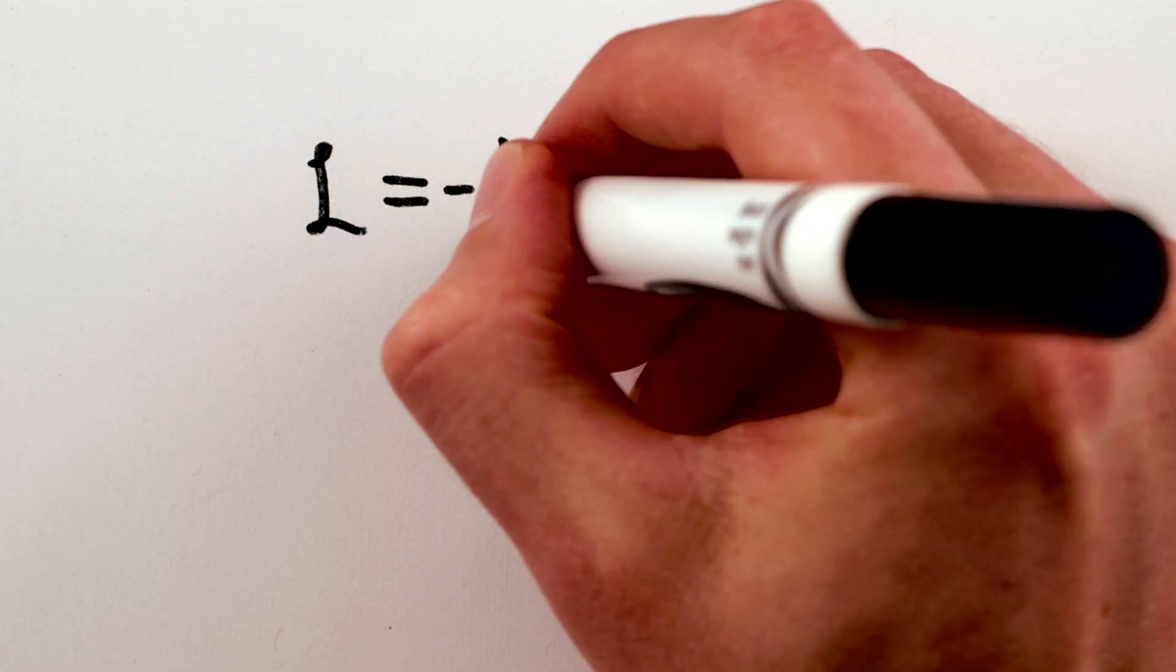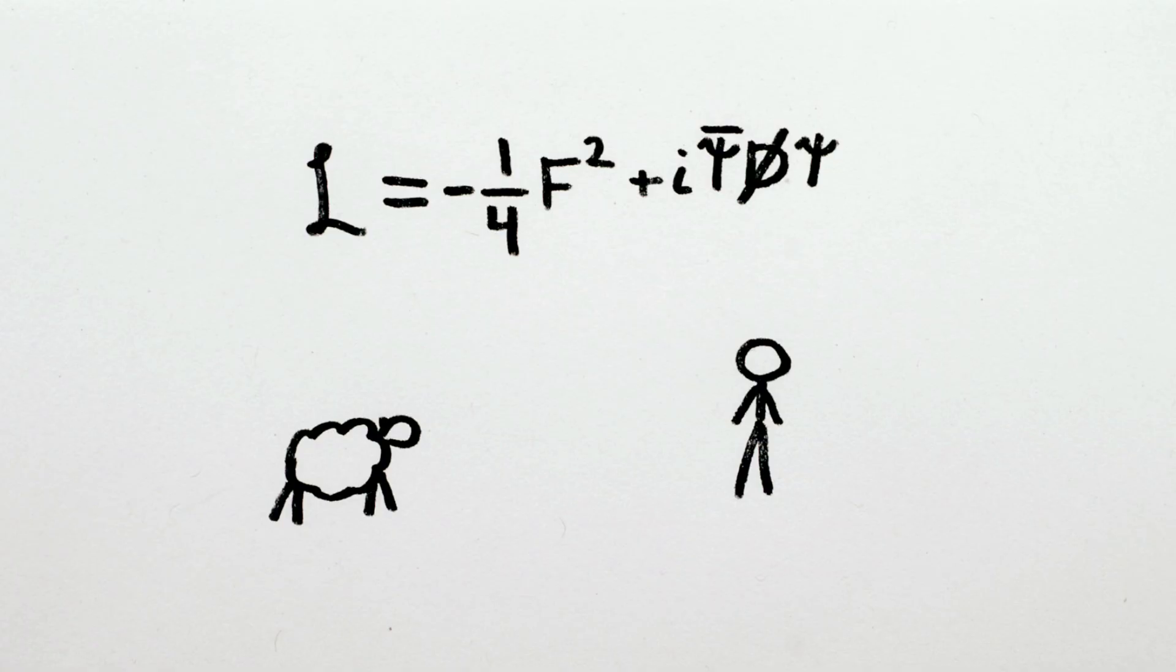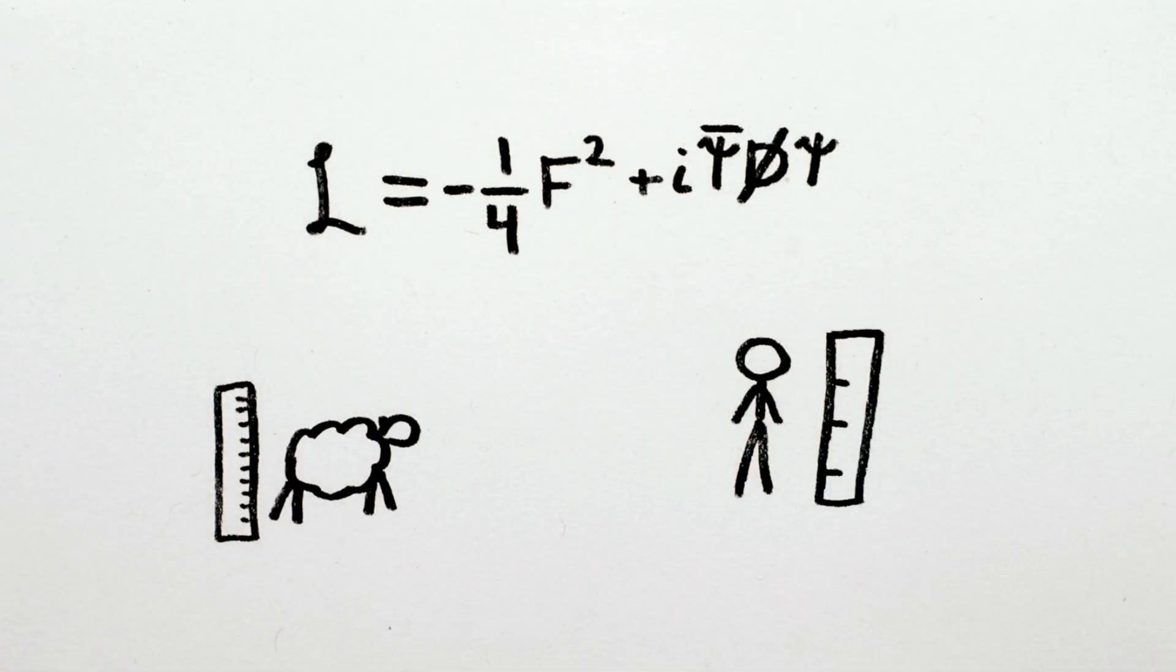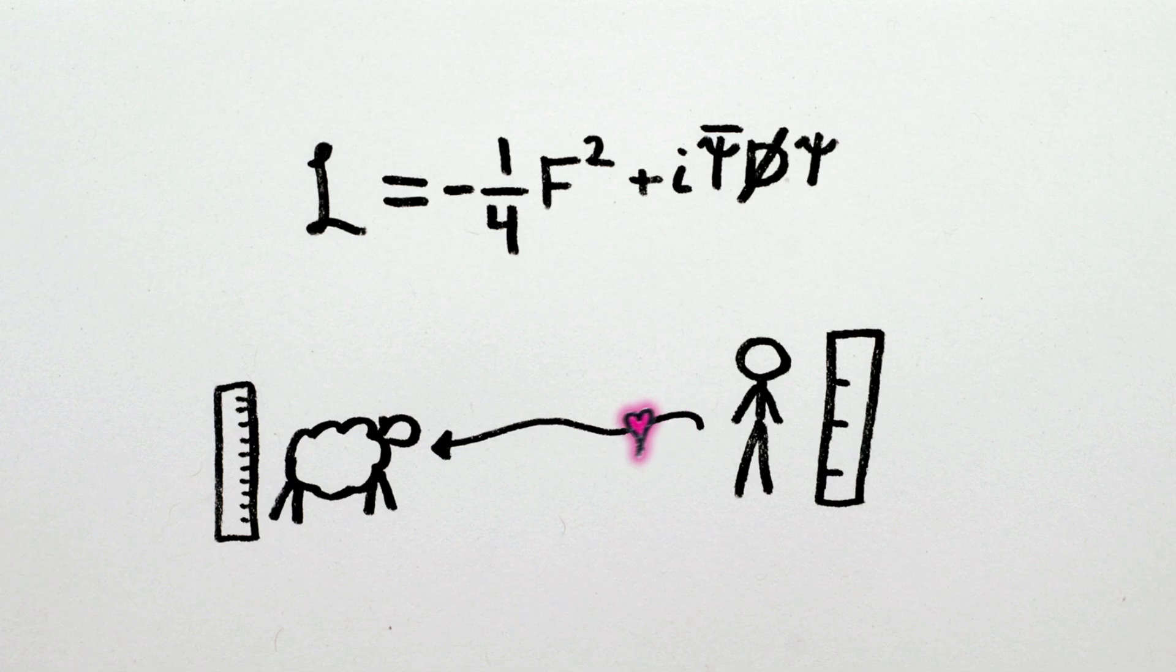So that's it, real standard model physics in your own barnyard. And hopefully now you can see why measuring things differently in different places inevitably gives rise to a long-range interaction mediated by a particle.